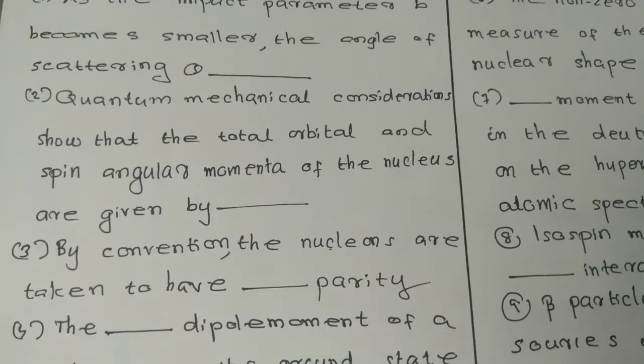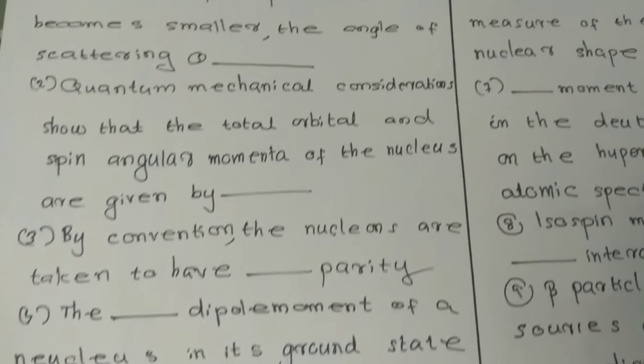Question number two: quantum mechanical considerations show that the total orbital and spin angular momentum of the nucleus are given by dash.